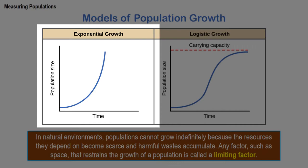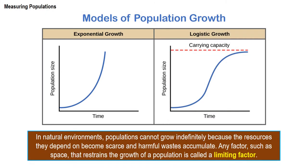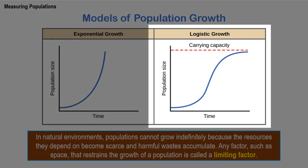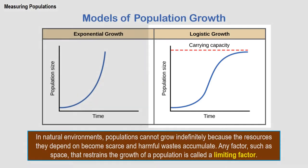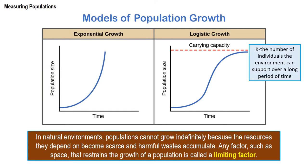In natural environments, populations cannot grow forever because the resources they depend on become scarce and harmful waste accumulates. Any factor that restrains the growth of a population is called a limiting factor. This is why the logistic model was established — it builds on the exponential model but accounts for the influence of limiting factors. The logistic model includes a new term called carrying capacity, symbolized by K, which is the number of individuals that the environment can support over a long period of time.